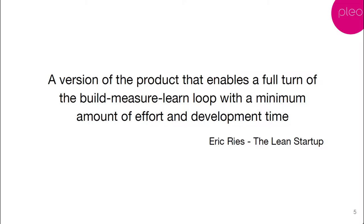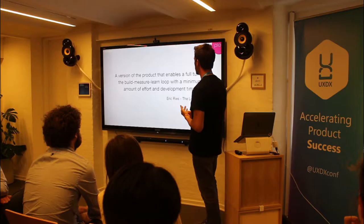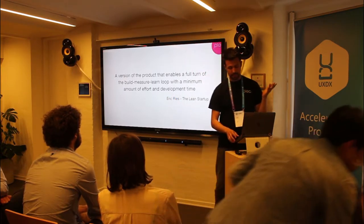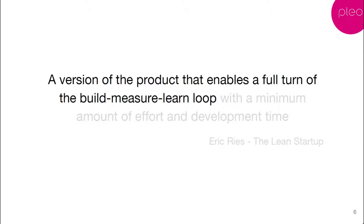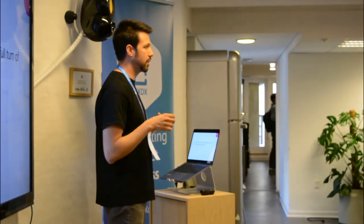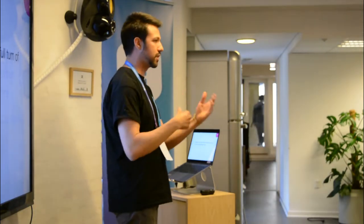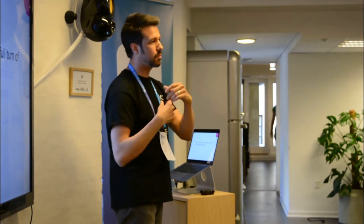So before starting to build an MVP, as a developer you have to understand what an MVP is. You get this reference from the book that most everybody has read — The Lean Startup — which says an MVP is a version of the product that enables a full turn of the build, measure, learn loop with a minimum amount of effort and development time. The first part means I need to build something that is going to change in one month, so let's make it in a way that I can change it — easy to modify.